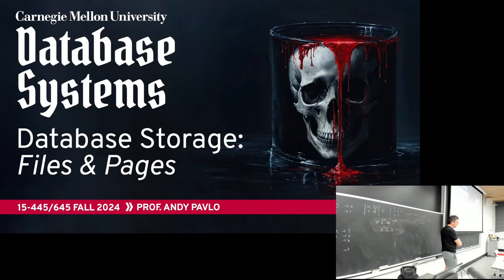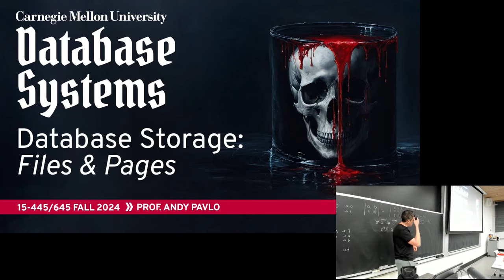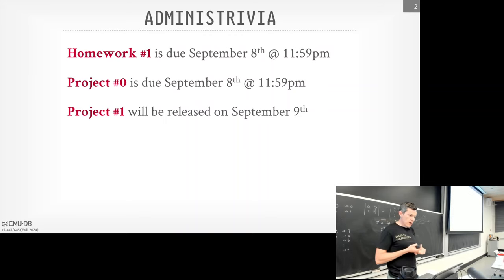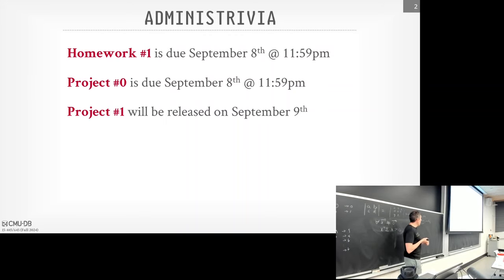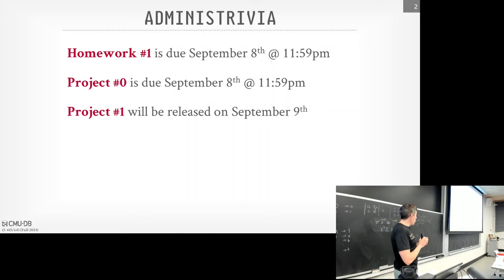As I said last class, today and going forward for the rest of the semester, this is where we start talking about what the internals of the database system look like. We're starting at the very bottom with files and pages on disk. Before we get to that, let's go through what's due right now: homework one and project zero are due this Sunday at midnight. About 100 out of 130 people have completed project zero — if you haven't started, please get started now. Homework one has you write some SQL queries in DuckDB and SQLite.